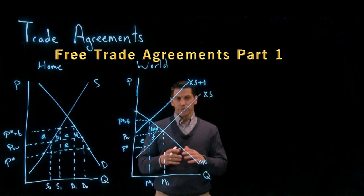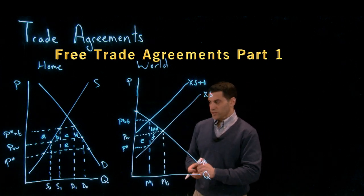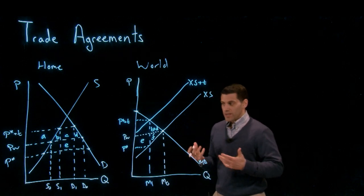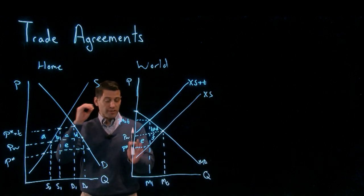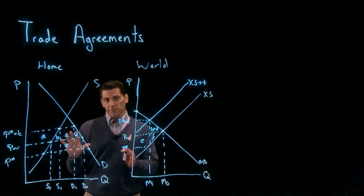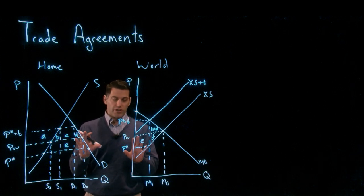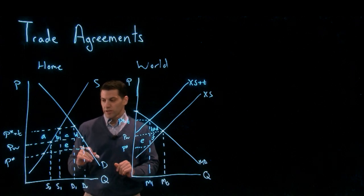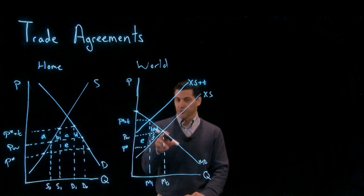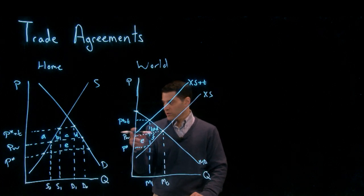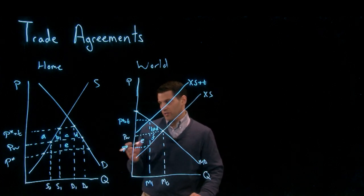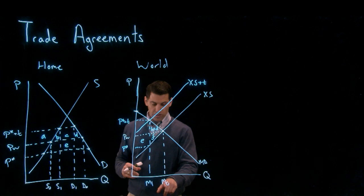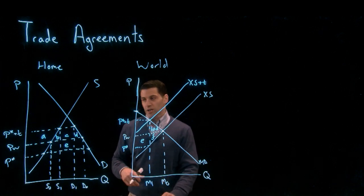Today we're going to talk about trade agreements. In particular, we're going to show how trade agreements can be welfare improving. We're going to take as a starting point the analysis of tariffs from Chapter 8. We're starting with a large country analysis, where the world price is given by the intersection of the export supply and import demand curves at a price of Pw, which gives us imports of M0.